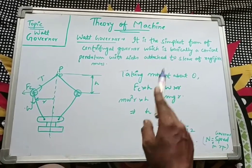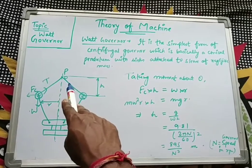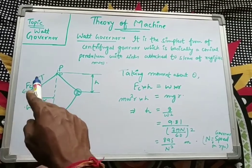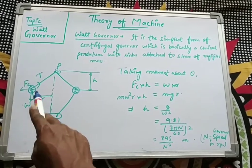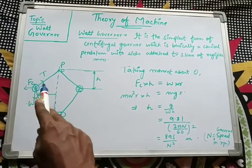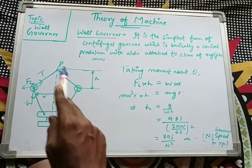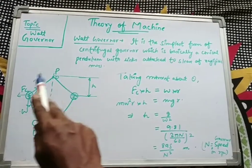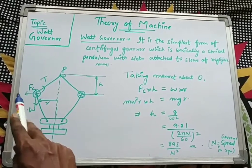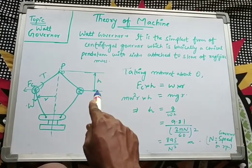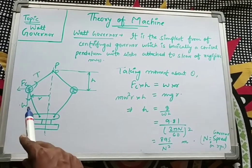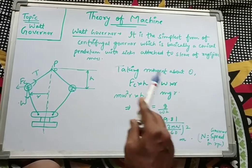To clarify: taking the moment about point O, we have Fc acting outward with perpendicular distance h, giving Fc × h on the left-hand side. The self-weight W has perpendicular distance r, giving W × r on the right-hand side. Tension T passes through O so it contributes no moment and is excluded.